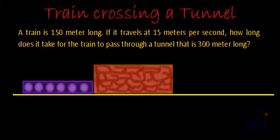The first problem we are taking is a very classic problem in which there is a train and a tunnel. The problem is: a train is 150 meters long. If it travels at 15 meters per second, how long does it take for the train to pass through a tunnel that is 300 meters long? Let's set aside the statement for now and see what happens when we talk about a train and a tunnel.